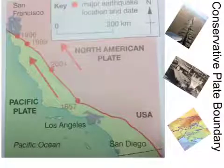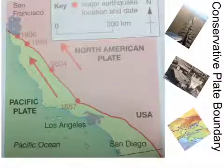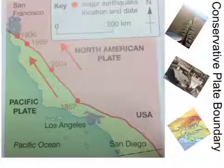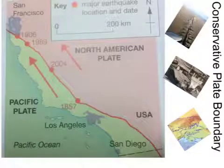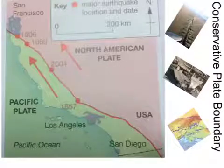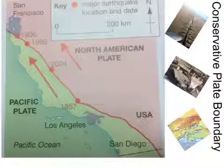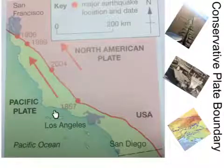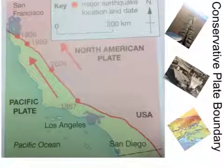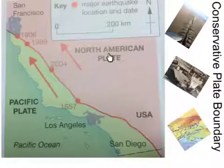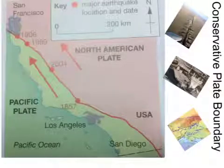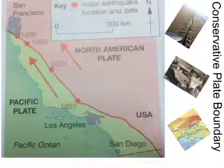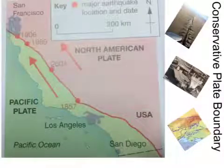This section is about a conservative plate boundary. As you can see, at a conservative plate boundary you've got plates that are sliding past each other. Sometimes they slide in opposite directions, but on this one — between the North American plate and the Pacific plate — they are sliding past each other, generally going in the same direction, but at different speeds.